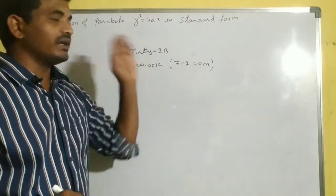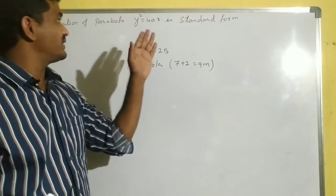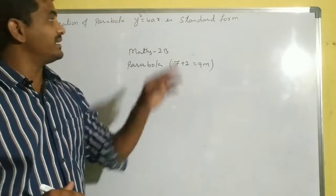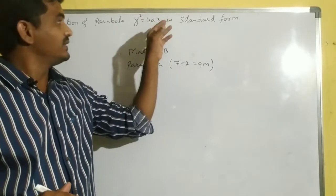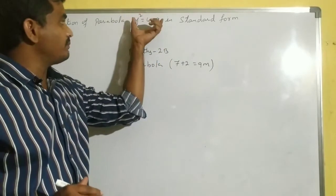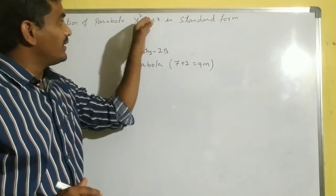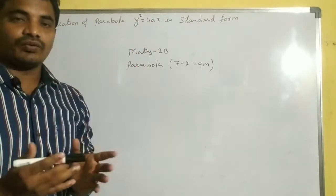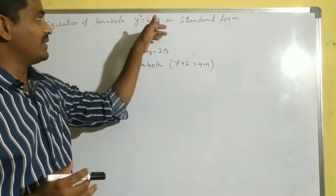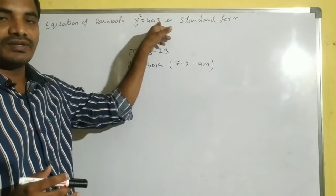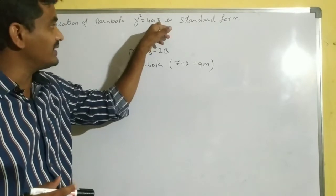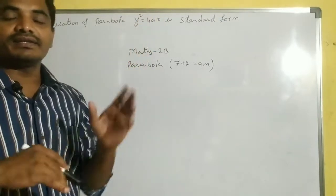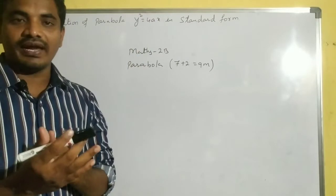The first question is based on the standard form of the parabola y² = 4x. This parabola is symmetric to the x-axis because x is there. If x is there, it is symmetric to the x-axis.